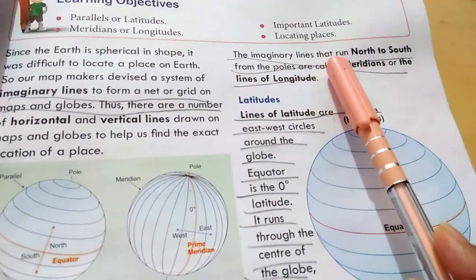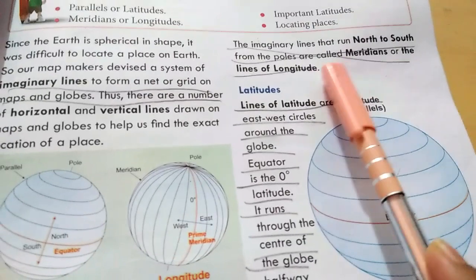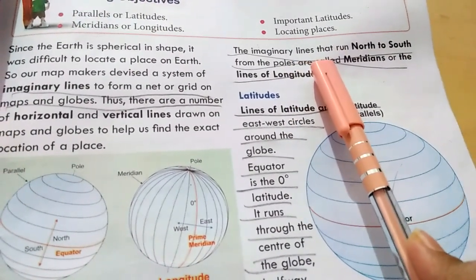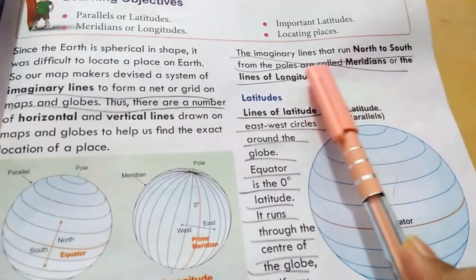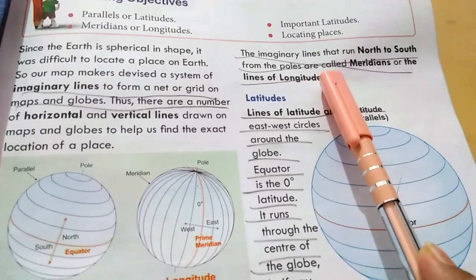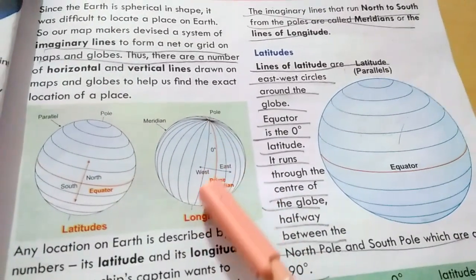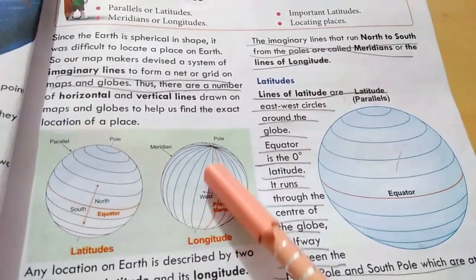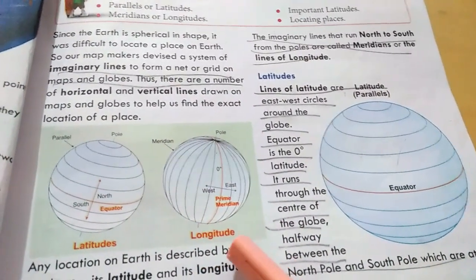The imaginary lines that run north to south from the poles are called meridians, or lines of longitude. These imaginary lines, which do not really exist, run north to south from the poles and are called lines of longitude.